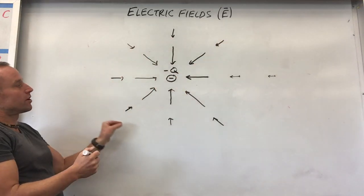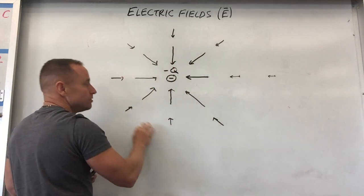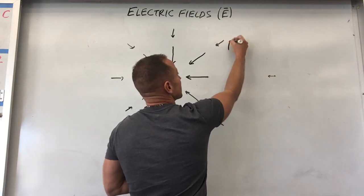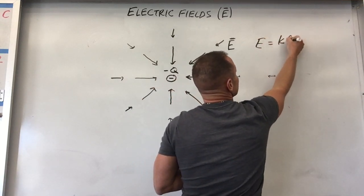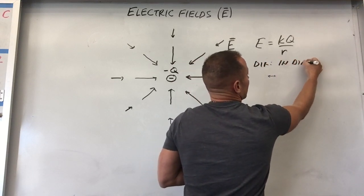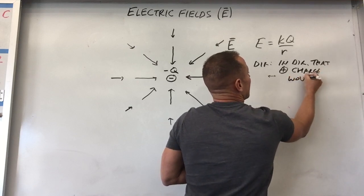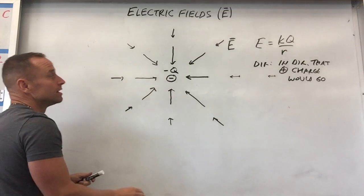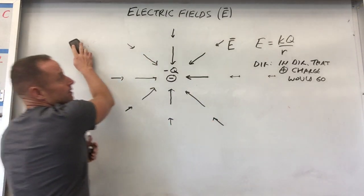No matter where I put a positive charge around the negative charge, it's always attracted, and more strongly the closer it is. By imagining how a positive charge would respond everywhere around, you can map out the electric field — it points inward and gets weaker farther out. The electric field around a negative charge points inward everywhere, since positive charges placed anywhere around it get drawn toward it. The field around a positive charge would look the same but with arrows reversed.